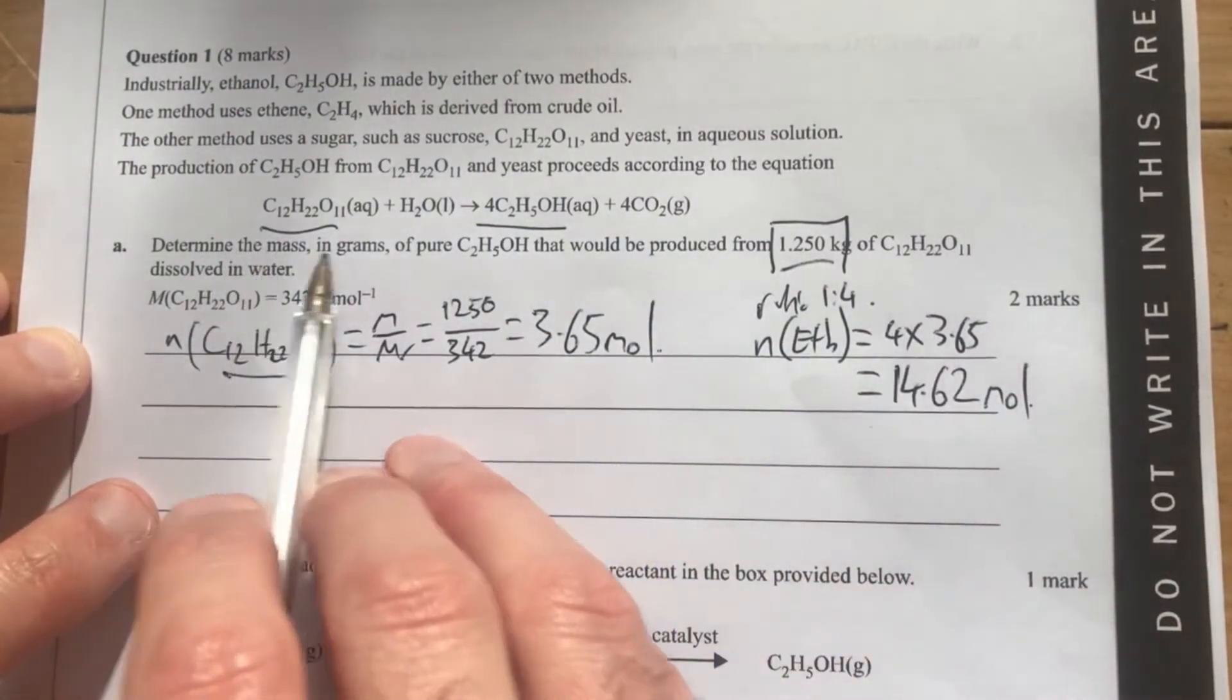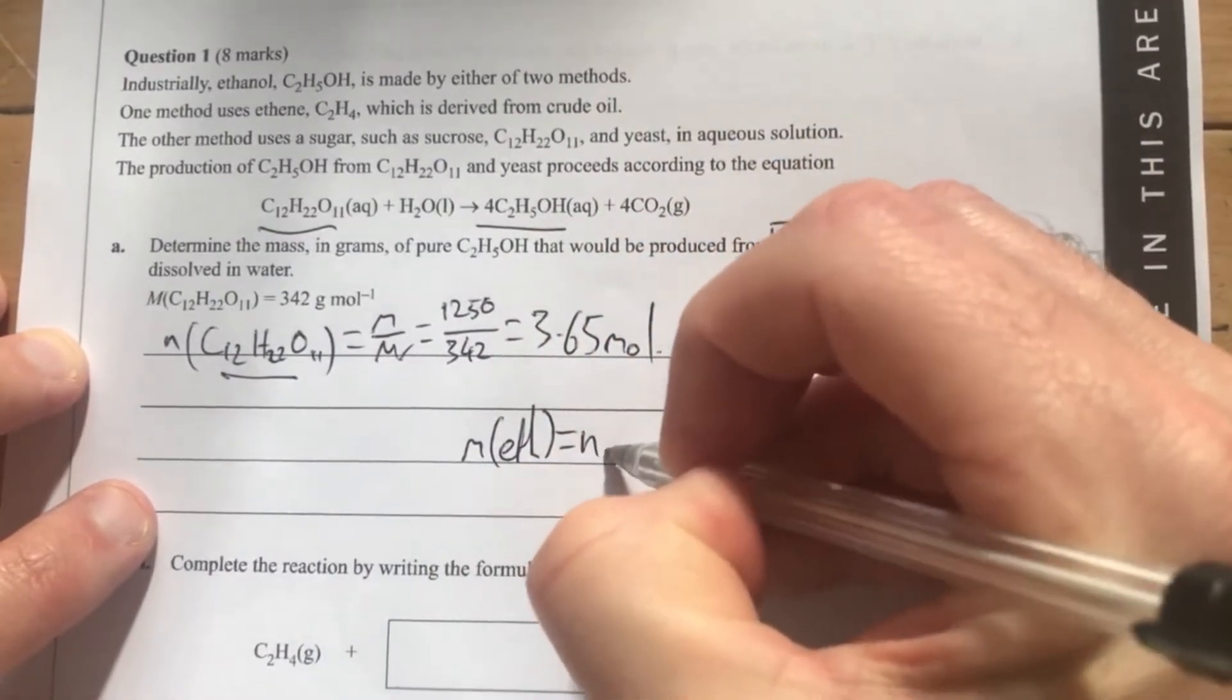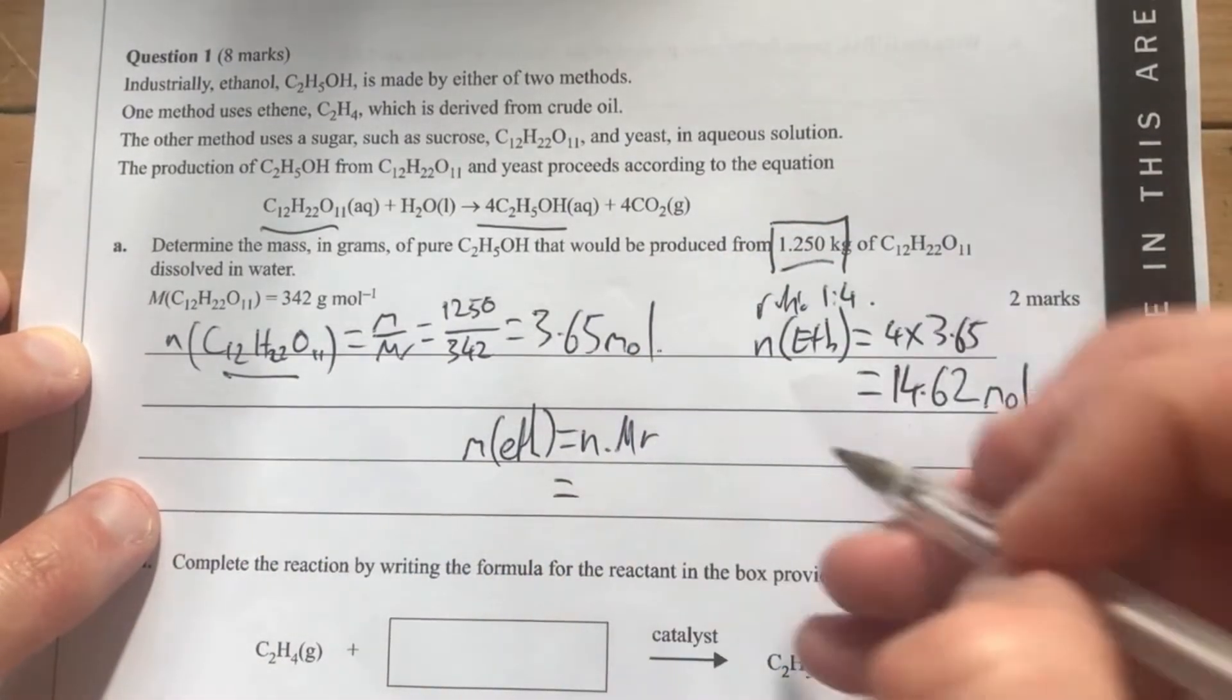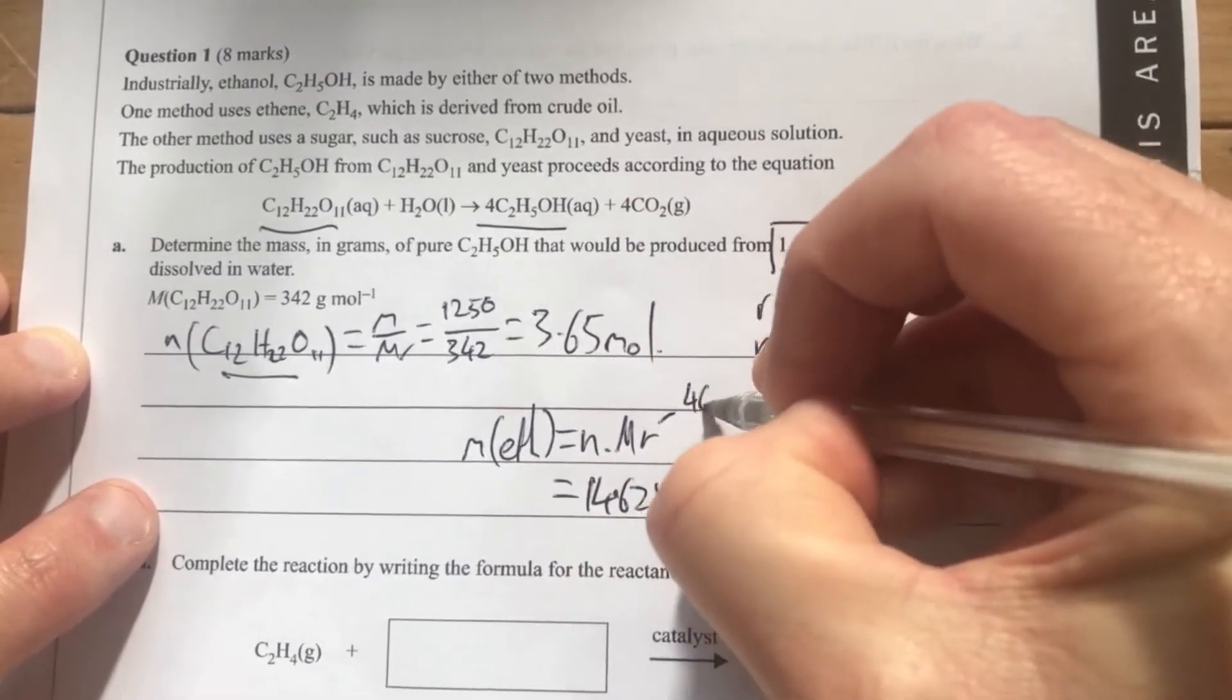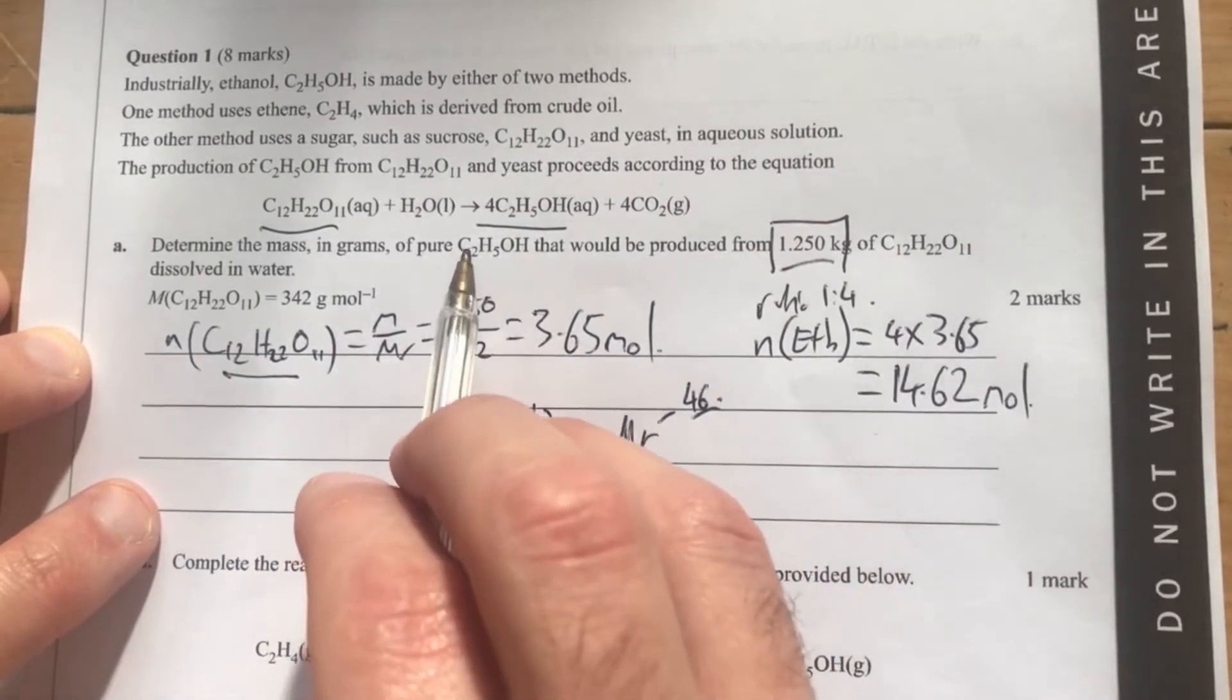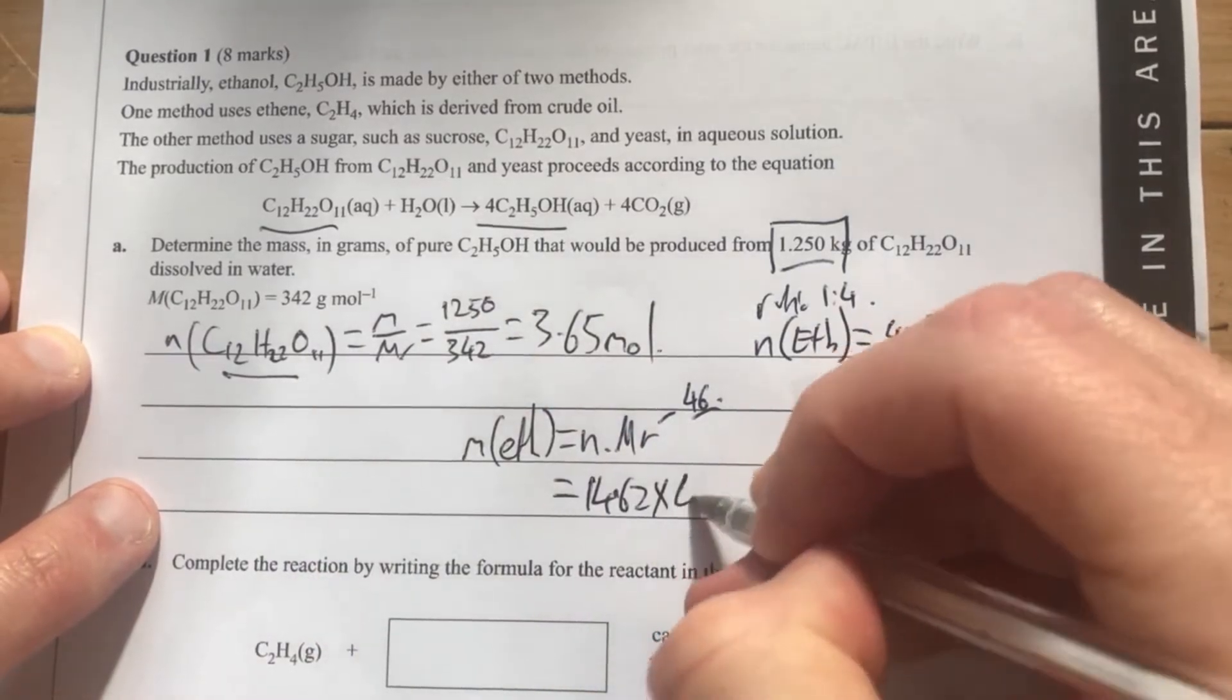Then I'm going to go into my mass in grams. So my mass of ethanol equals my number of moles times my molar mass, always writing out formulas as well. So 14.62 times by my molar mass of ethanol, which I know is 46. If you don't know it, you can simply count up what you've got here, which is 2 12s, a 16, and 6 1s.